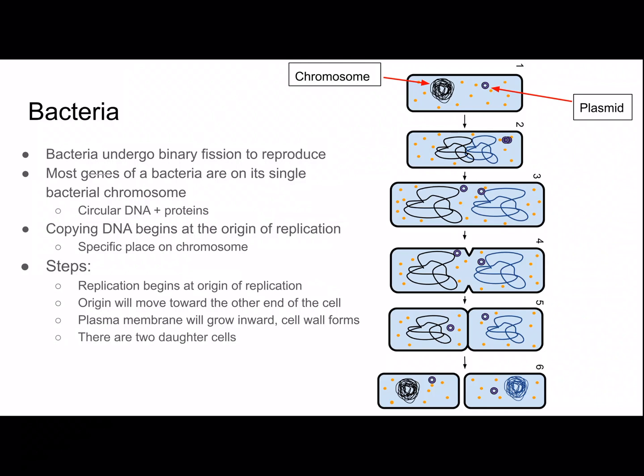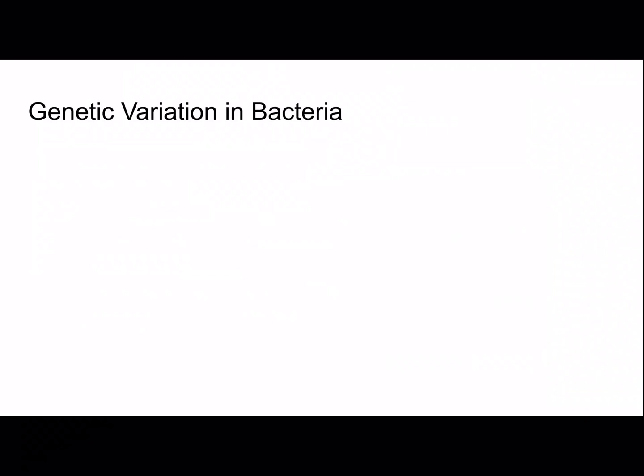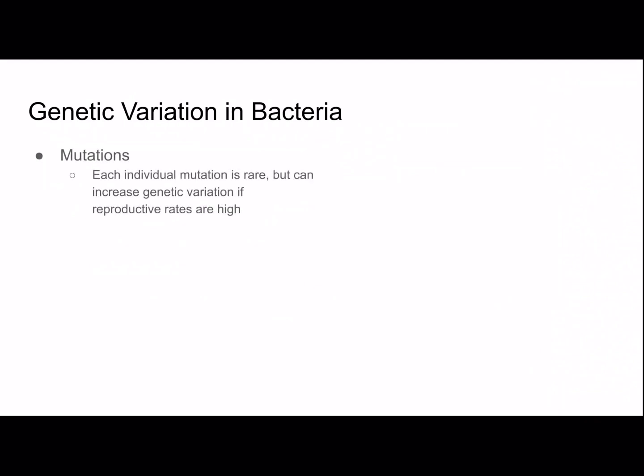Because bacteria reproduce asexually, you might wonder how they have any genetic variation. One source is mutations. Each individual mutation is rare, but it can increase genetic variation when reproductive rates are high — and bacteria reproduce at a very high rate — so mutations do contribute to genetic variation.